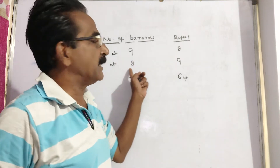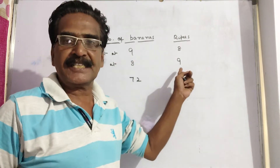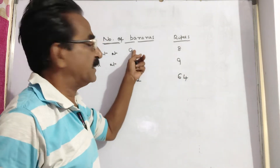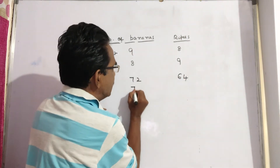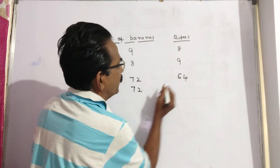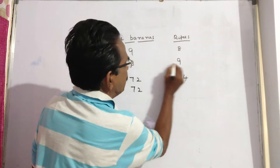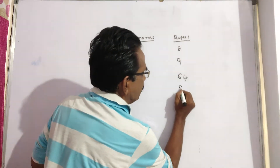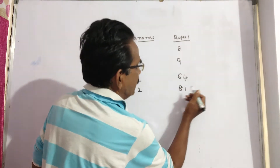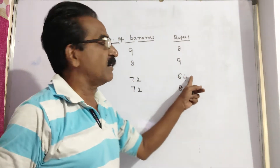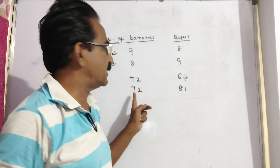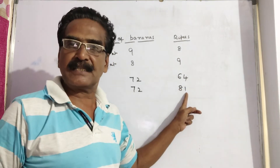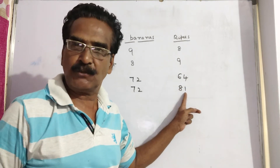Let us multiply the second statement by 9. So 8 × 9 = 72 bananas, sold at 9 × 9 = 81 rupees. This is the selling price of 72 bananas.